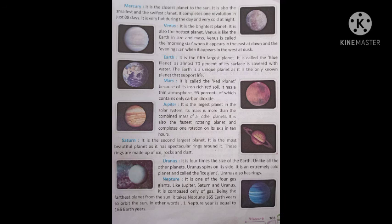Mercury — Hindi mein Budh kehte hain: It is the closest planet to the sun, and also the smallest and the swiftest planet. It completes one revolution in just 88 days. It is very hot during the day and very cold at night.